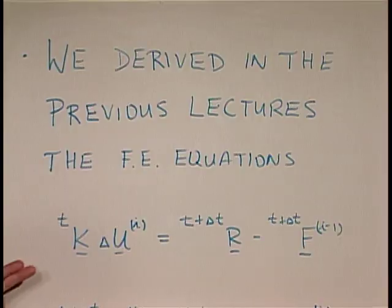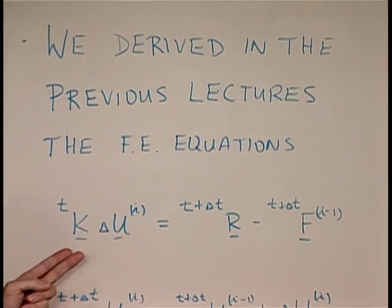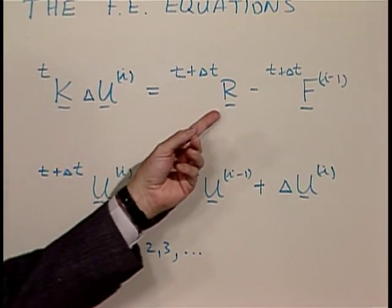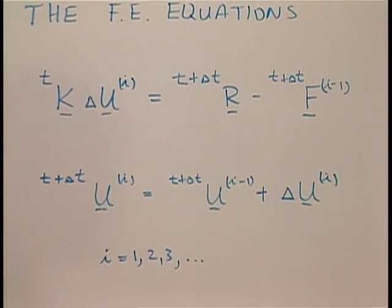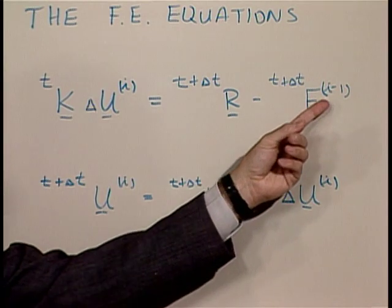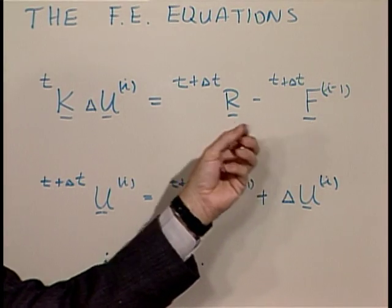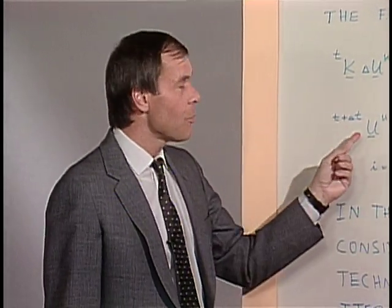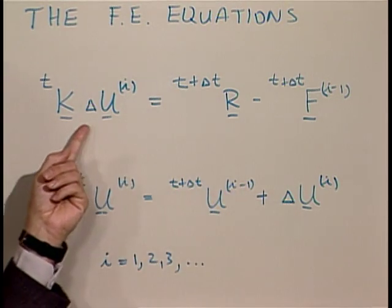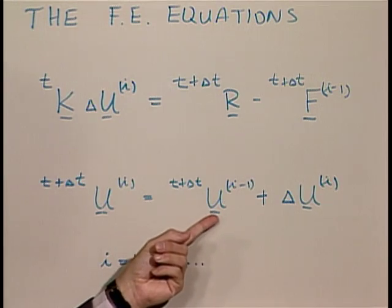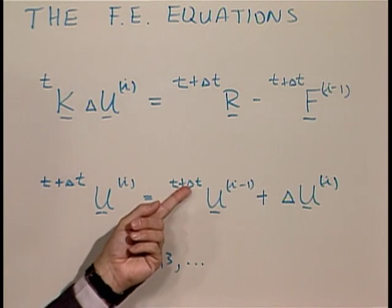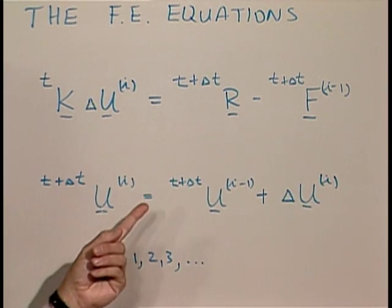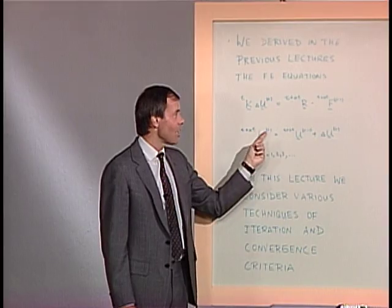In the previous lectures, we derived this set of equations where tK is a tangent stiffness matrix, delta u_i is a nodal point vector of incremental displacements corresponding to iteration i, t+delta_t R is the externally applied load vector corresponding to time t+delta_t, and t+delta_t F_{i-1} is equal to the nodal point force vector corresponding to the internal element stresses at time t+delta_t at the end of iteration i-1. The displacements are updated as shown here — delta u_i is calculated from this set of equations and added to the previous displacements to get the new displacement vector corresponding to iteration i.